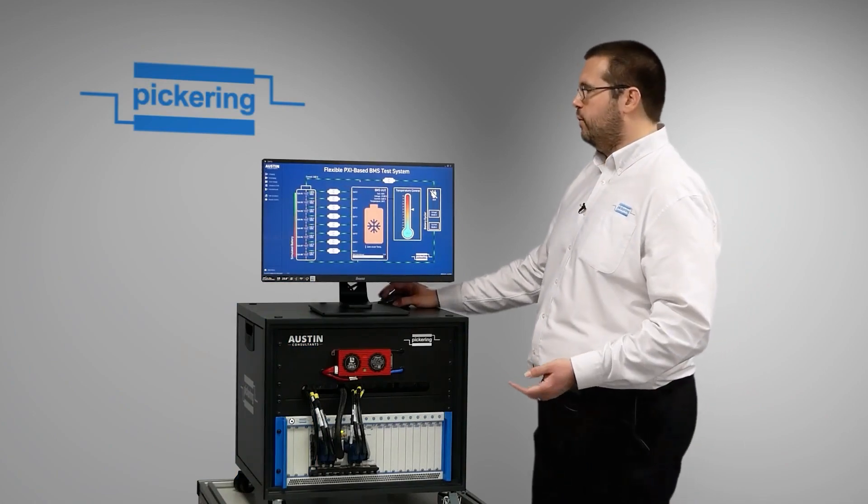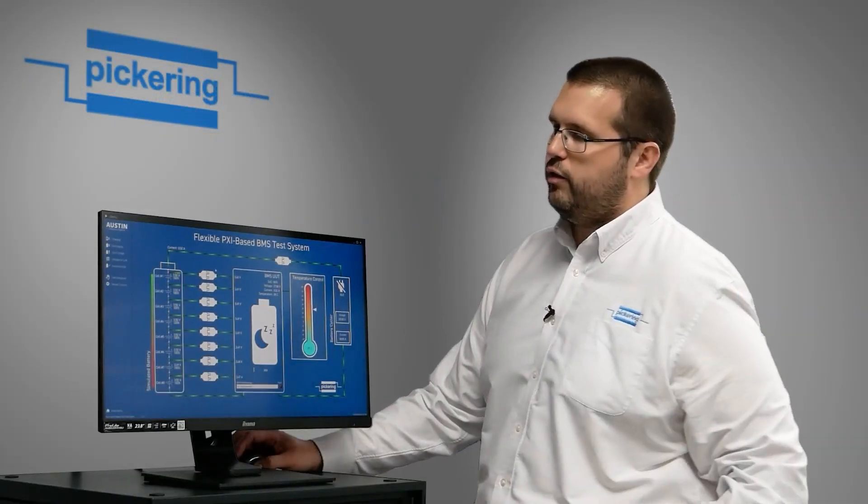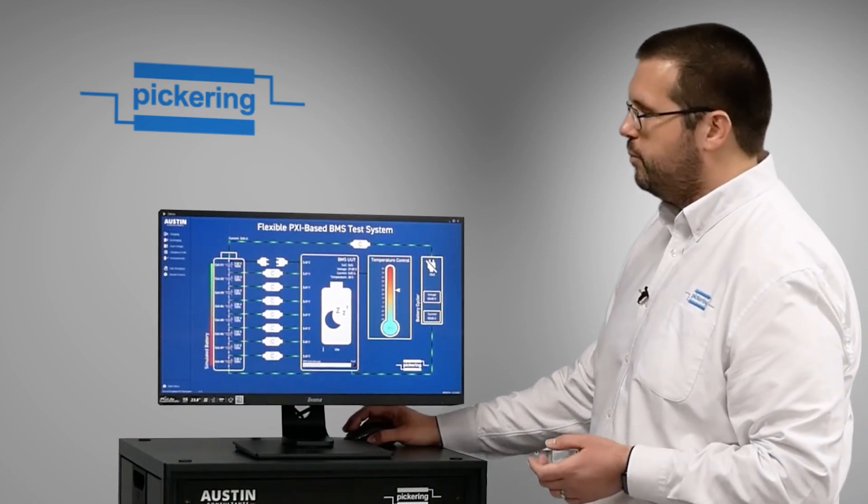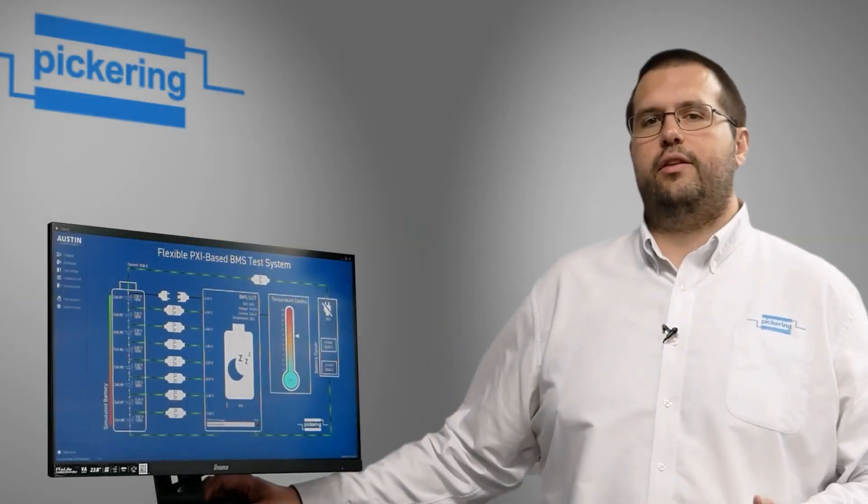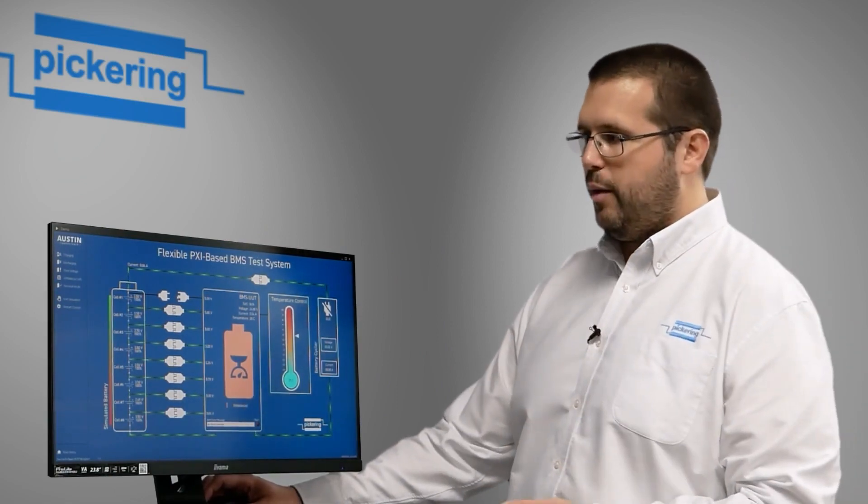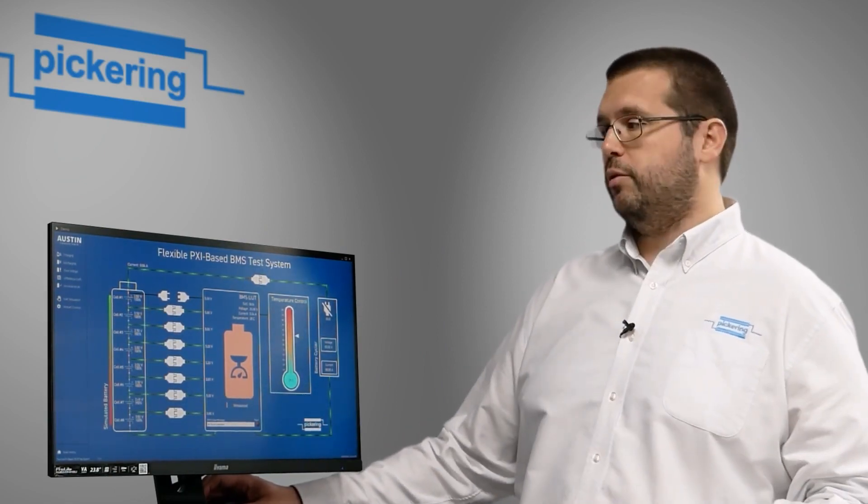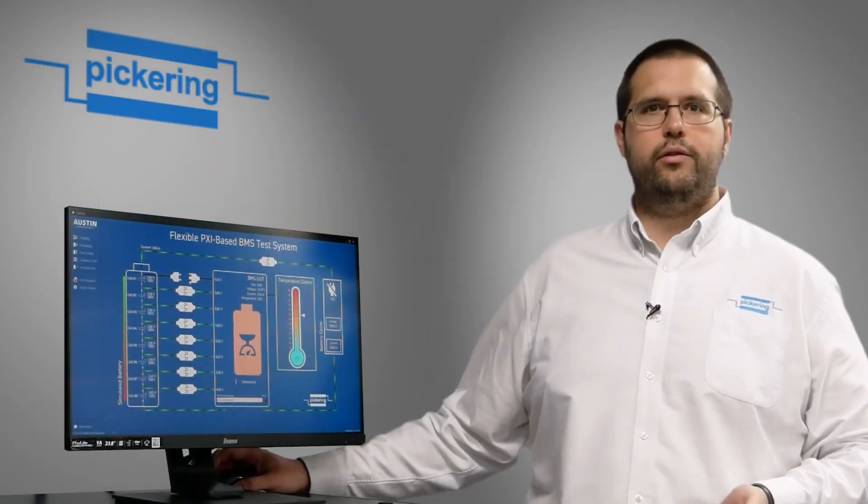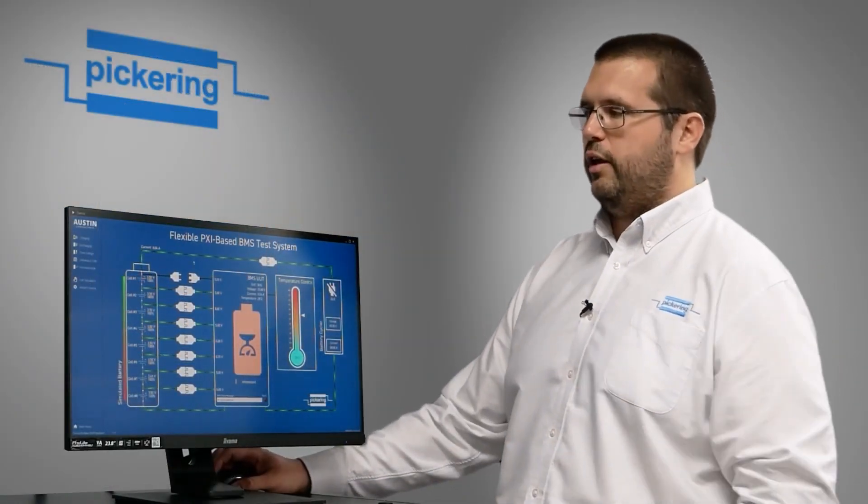Likewise, I mentioned fault insertion before. Each one of these connections is a connection between the BMS and the cell. So if we open one of those, it's basically disconnecting that cell from the BMS through that fault insertion module, and here you can see the BMS is reporting that it's now unbalanced because obviously that cell has been removed.